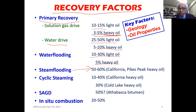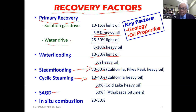Steam flooding can recover 50 to 60 percent of a typical heavy oil, and also light oil under the right conditions. Cyclic steaming is primarily applicable to heavy oils, typically yielding around 10 percent, though in some cases 30 to 40 percent has been achieved in Alberta. SAGD, a special variation of steam flooding, has achieved 50 percent recovery. And finally, in-situ combustion — the topic of today's talk — although not an economic success in most cases, can recover 25 to 50 percent of the oil.